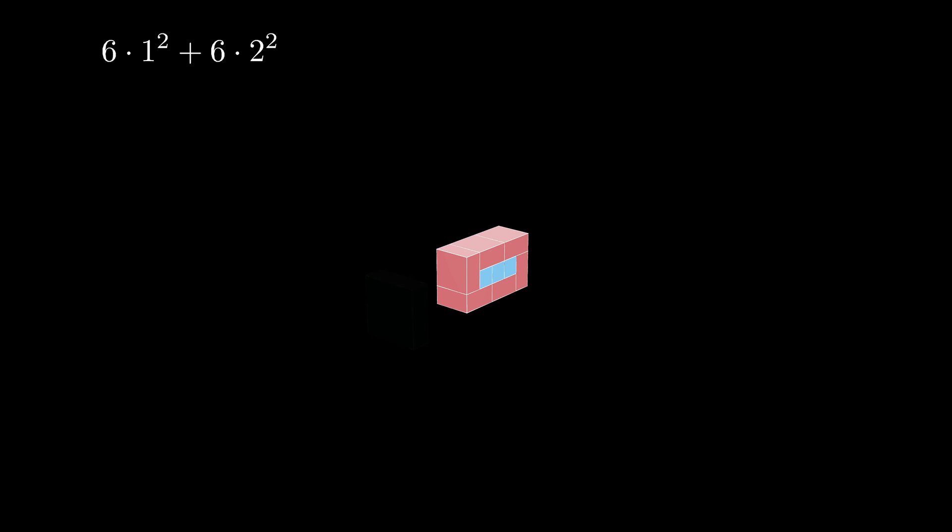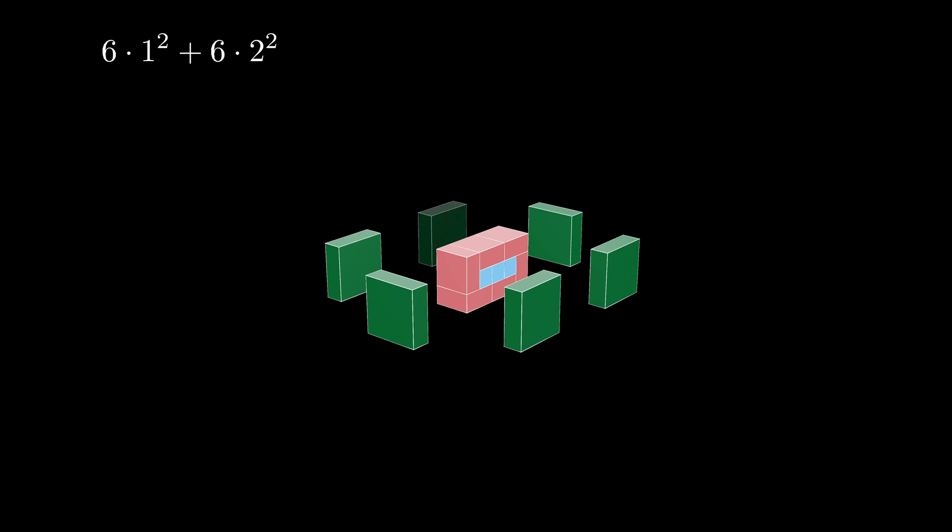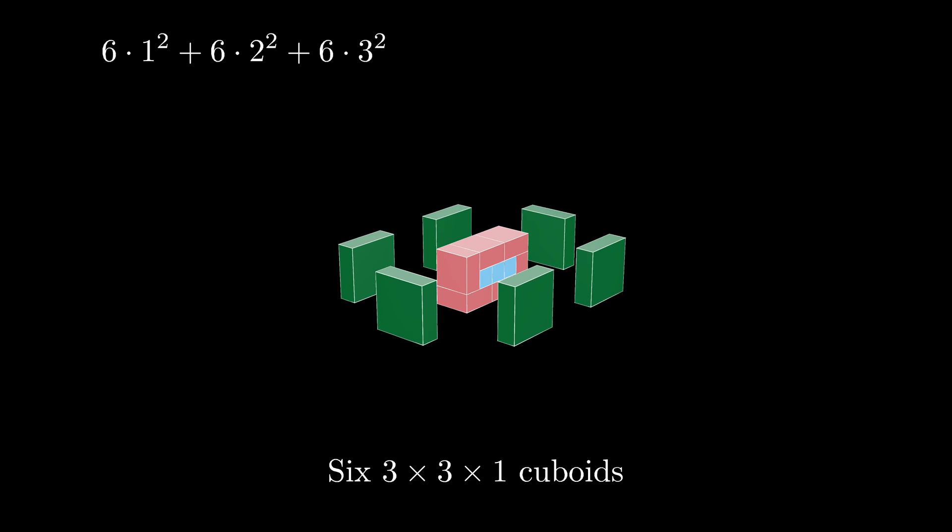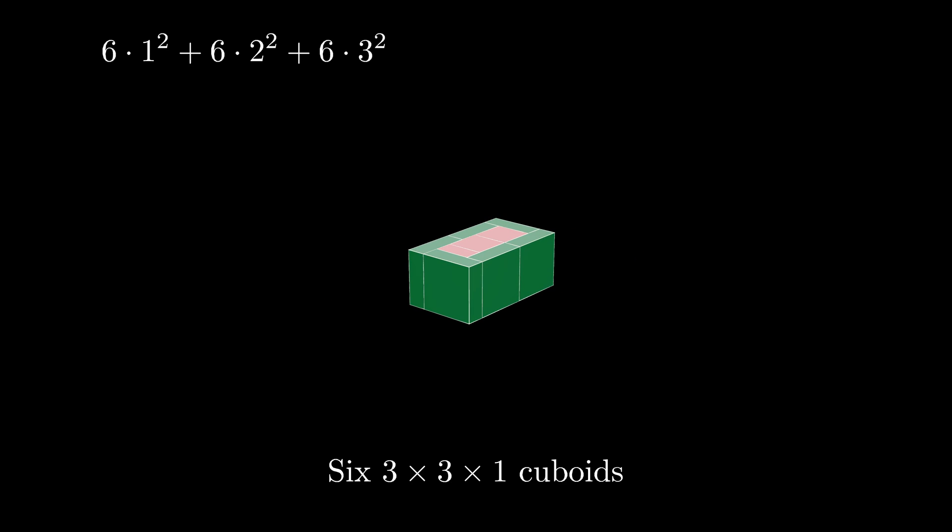Now let's create a new shell for this shape by using six 3 by 3 by 1 cuboids, 2 on the left and the right each, and 1 each in the front and the back. Each of these cuboids contains a volume of 3 squared times 1, so the full shell created here encloses a volume of 6 times 3 squared.